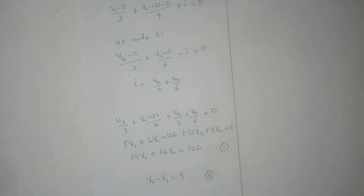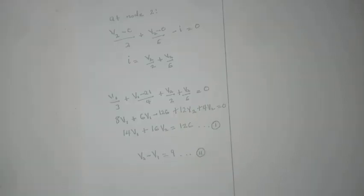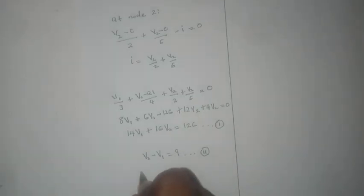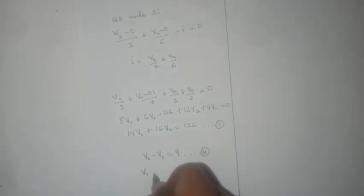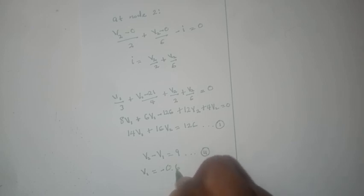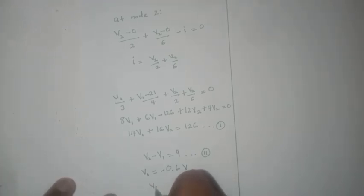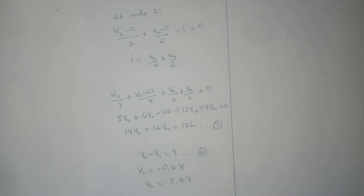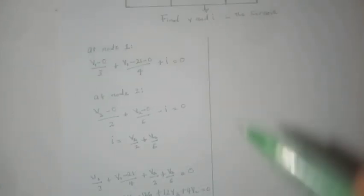We can then proceed to solve these equations simultaneously and we arrive at the voltage values of the node voltages v1 and v2. We solve this simultaneously, we would arrive at v1 being equals to minus 0.6 volts and v2 would be equals to 8.4 volts.